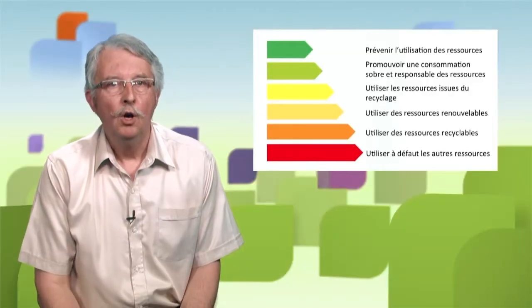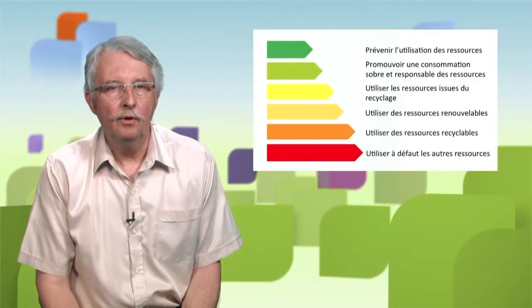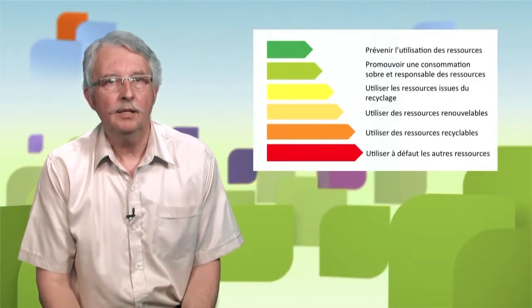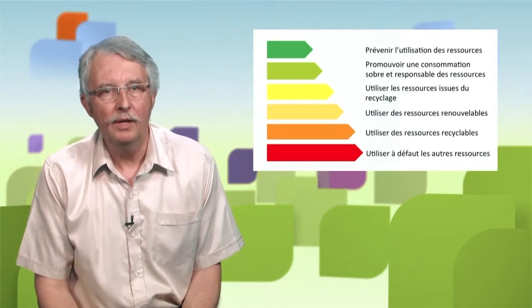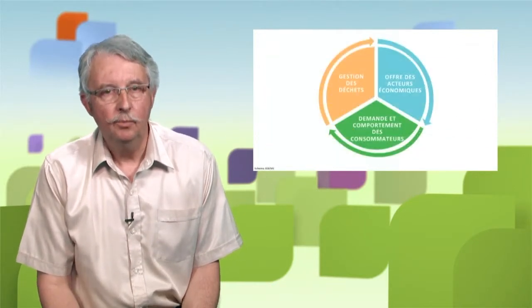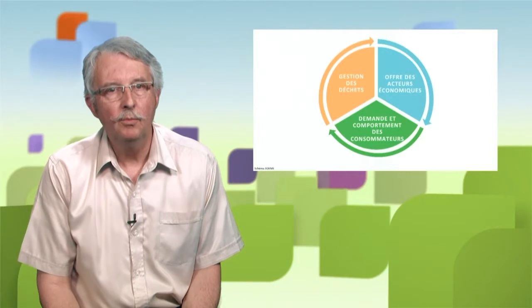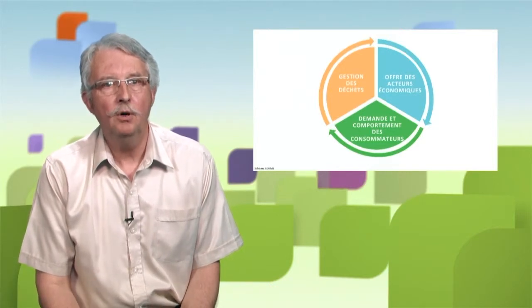We also need to use recyclable resources if we don't want to use resources from recycling, and we need to use other resources which are neither recyclable nor reusable. In order to implement circular economy, a certain number of actions are possible, organized according to three areas and seven pillars.